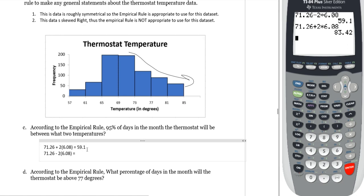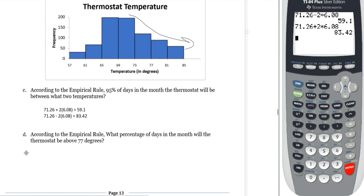So, 59.1 and 83.42. So, I'd say that the temperature would be between those two values. And lastly, according to the empirical rule, what percentage of days in the month will the thermostat be above 77 degrees?